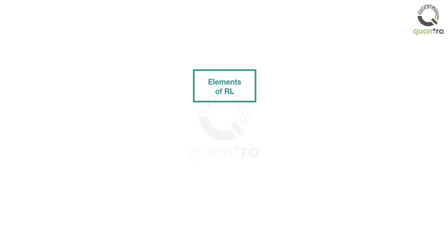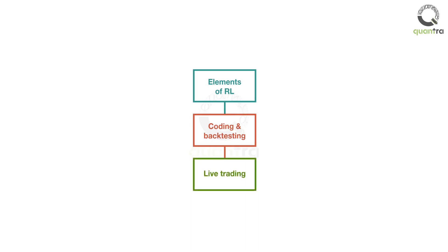The course is divided into three parts. The first part is called the Elements of RL. You will learn the important components of an RL model such as states, actions, and rewards. The second part is called Coding and Backtesting. You will construct and apply the elements learned in the first part to create the RL model for backtesting on a single stock. The third part is based on live trading and future enhancements.